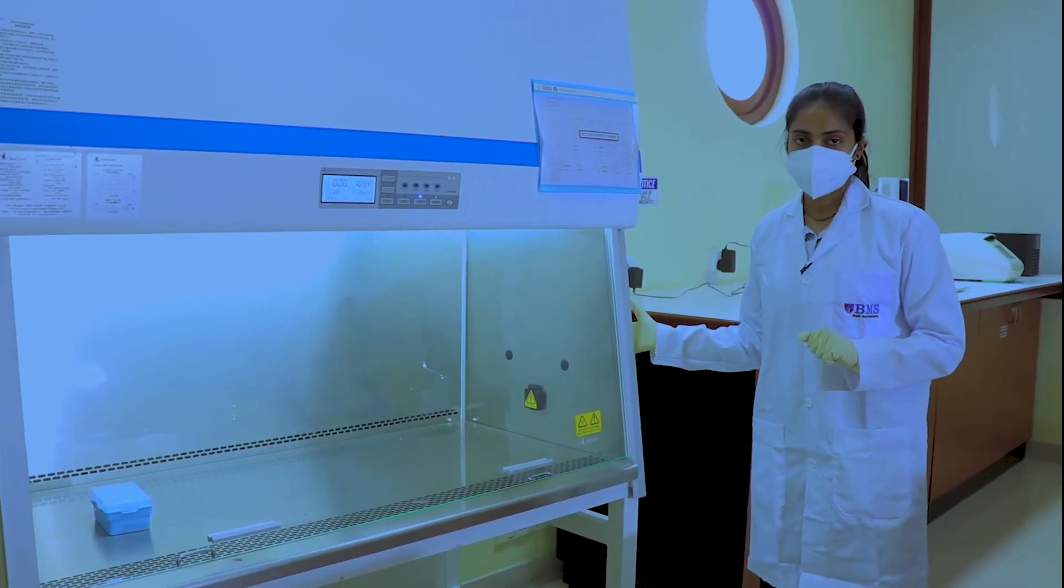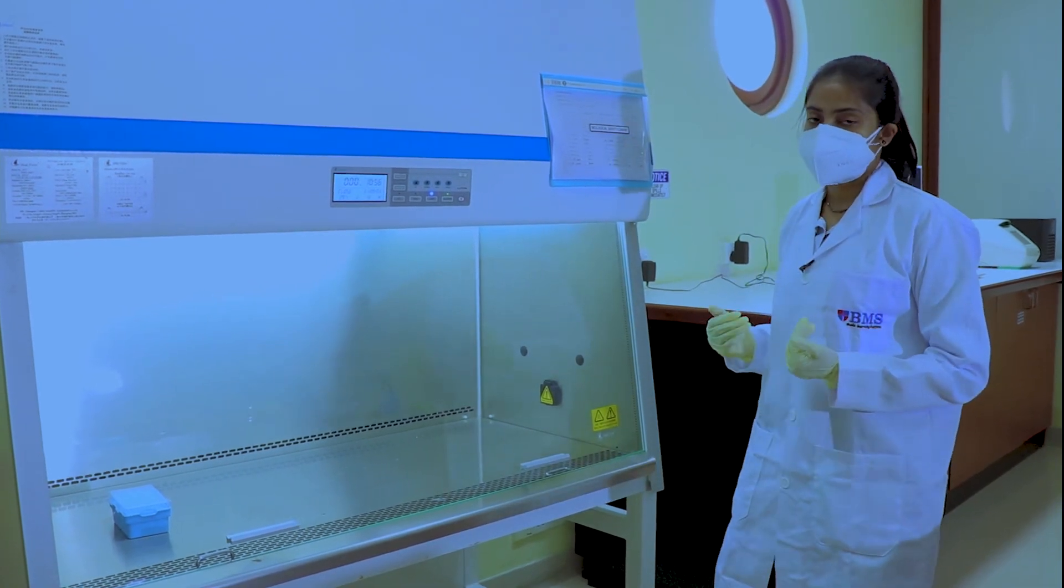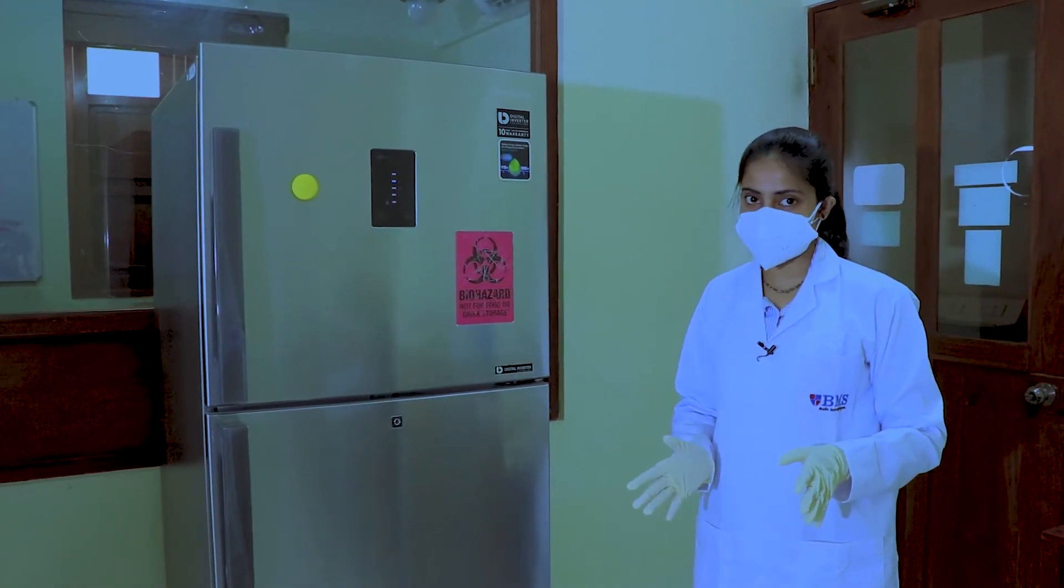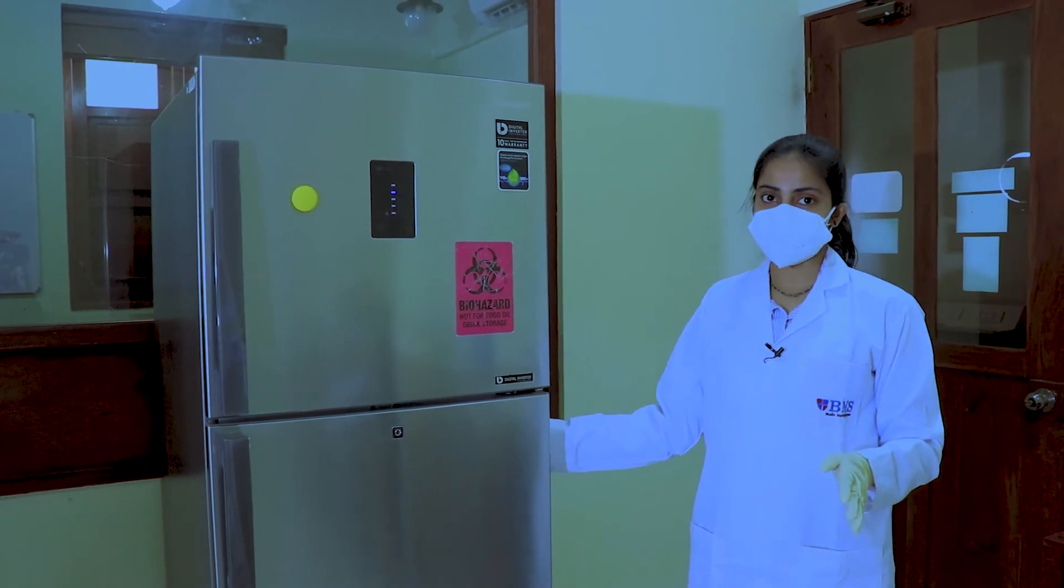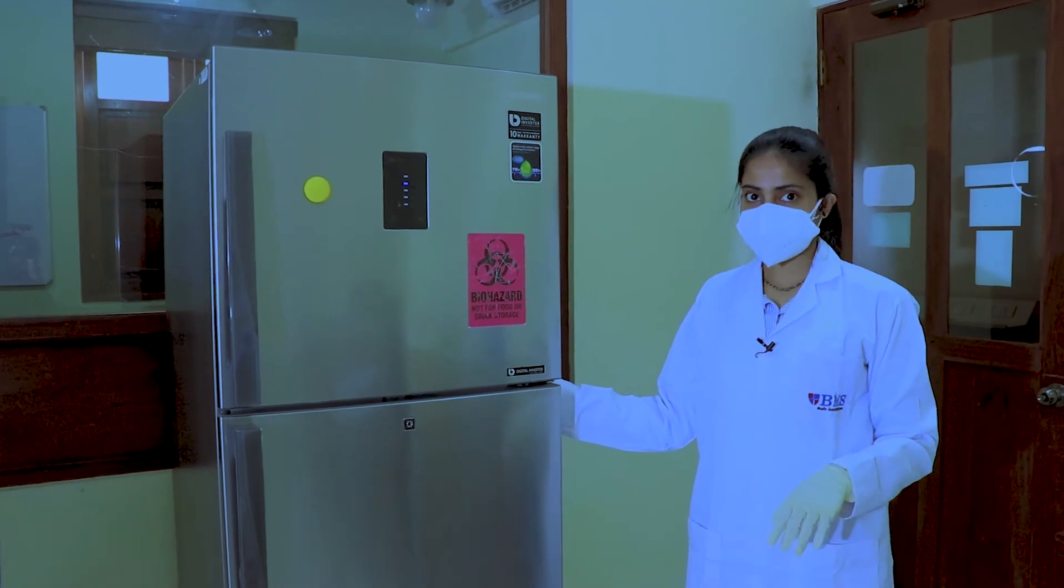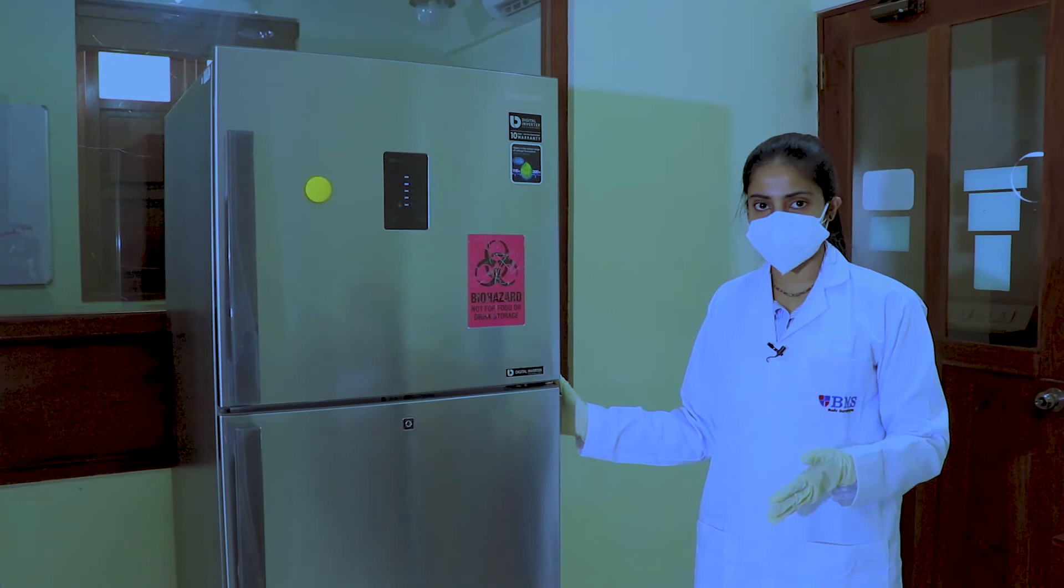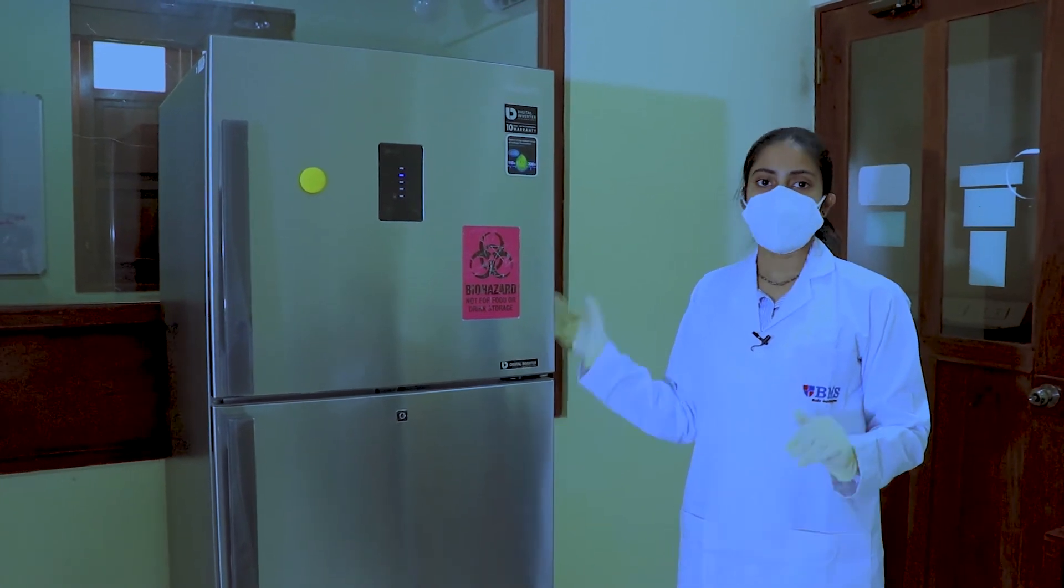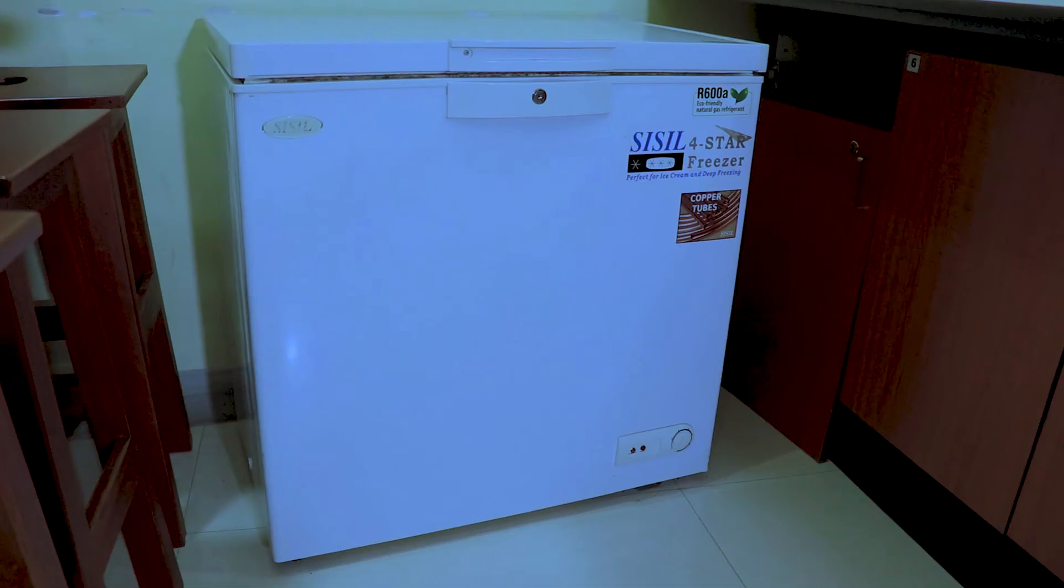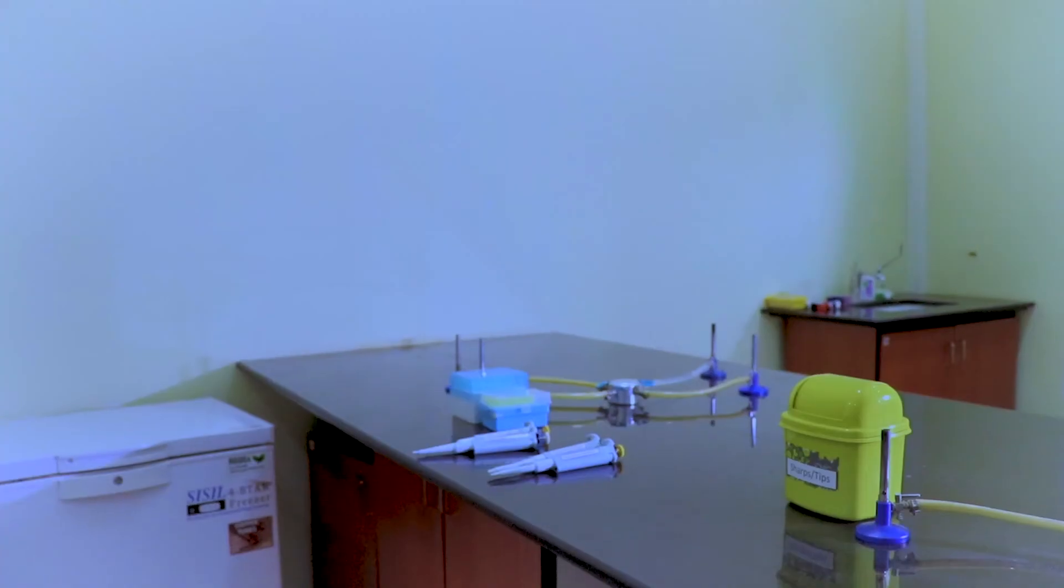This is a class 2 biosafety cabinet where students prepare their PCR master mix. There are two refrigerators in the lab: a two degrees Celsius refrigerator and a minus 20 refrigerator. The two degrees Celsius refrigerator is used for storage of samples and chemicals for short periods of time, and the minus 20 is used for storage of PCR reagents, enzymes, and other chemicals.